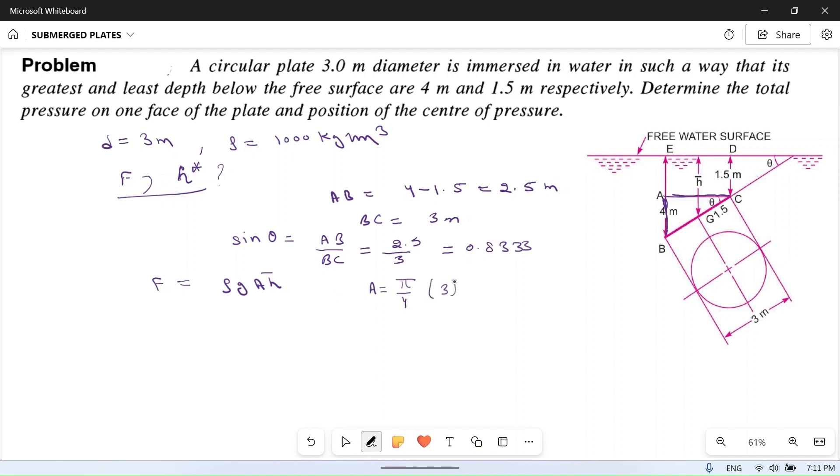d square, which is equal to 7.0685 meter square. This is the area of the circle. h bar is the distance of centroid of this circle to the free surface of water, which is equal to 1.5 meters.